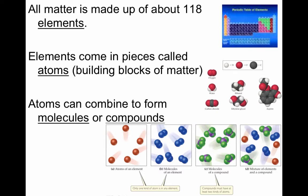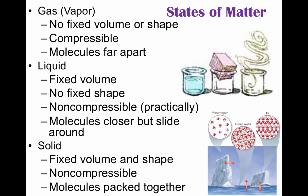The compound and the mixture have a little bit of everything combined together. There are two different ways we could classify matter: we could classify it in terms of states of matter, or we could classify it based on the composition of the matter. Starting with states of matter — you have solid, liquid, and gas. The gas or vapor has no fixed volume or shape. It is compressible, and the molecules are far apart.